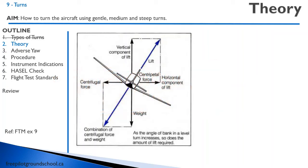Let's take a look at this diagram again and see what is right and what's wrong. Well, this weight vector — the force of gravity pointing down — is correct. Then we have this lift vector here, which is correct. And we have centripetal force, which is the horizontal component and the vertical component of lift. But here's something that is wrong: that vector does not exist, and consequently this one does not exist either.